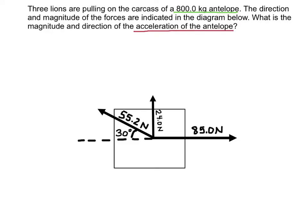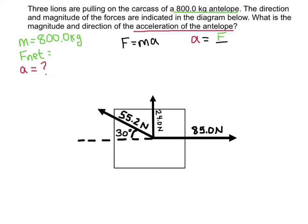Let's write down what we know before we start the problem and what we are trying to find. We know the mass of this antelope to be 800 kg, and we also know the net force indicated in the diagram — there are three forces so we will have to add them all together. What we are looking for is the acceleration. The equation we are going to use is F equals MA, rearranged to solve for acceleration: acceleration equals force divided by mass.